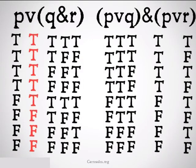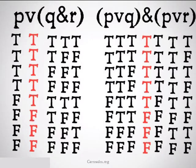We do the truth tables below and discover that they are the same — there are five truths at the top for both of them — so these are going to be replaceable, salvo veritate.